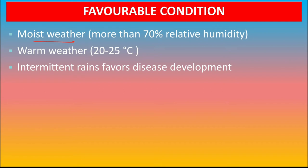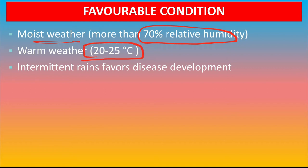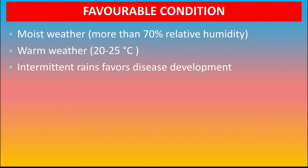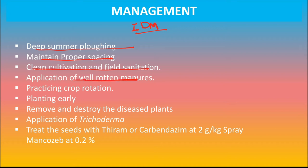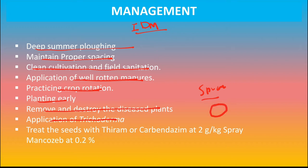Favorable conditions: moist weather with more than 70% relative humidity, warm temperature of 22–25°C, and intermittent rain — इन सब conditions में disease ज्यादा मात्रा में आती है। Management: For management of Alternaria Blight we should adopt integrated disease management practices like summer deep ploughing, maintaining proper spacing, clean cultivation and field sanitation, application of well-rotten manures, crop rotation, early planting, removal and destruction of diseased plants, application of Trichoderma, seed treatment with thiram or carbendazim, or spray mancozeb 0.2%.